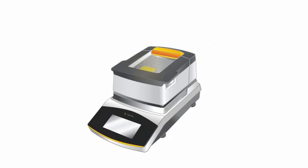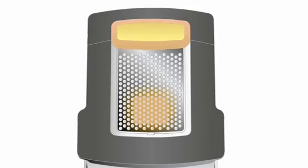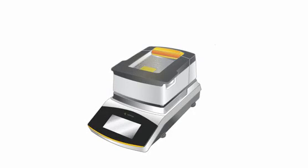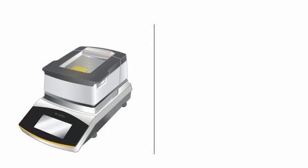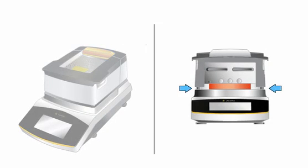The moisture analysis starts. The pulsating status light shows you also from a distance that a moisture determination is performed. Through the inspection window, you have the sample constantly in view. The integrated draft shield allows you faster and more accurate analysis, independent of the air drafts caused by the environment.